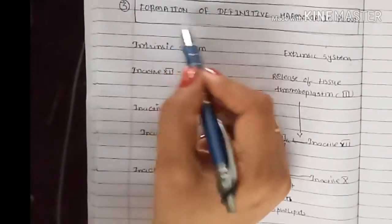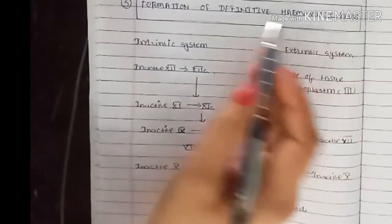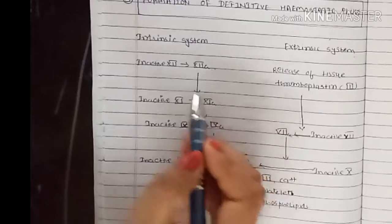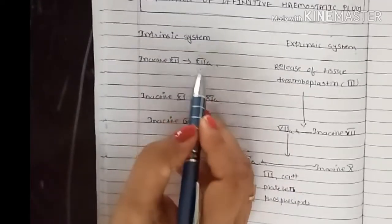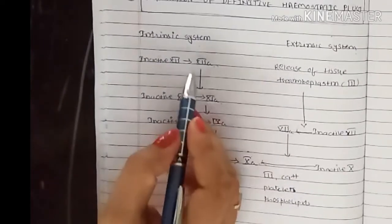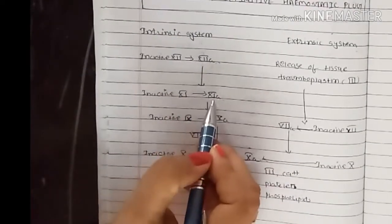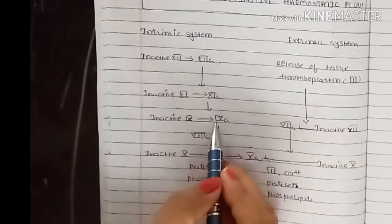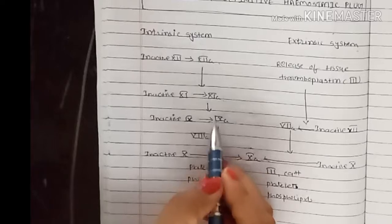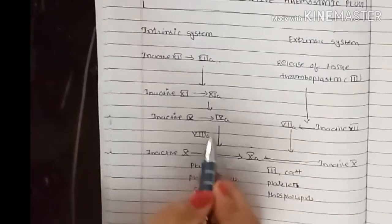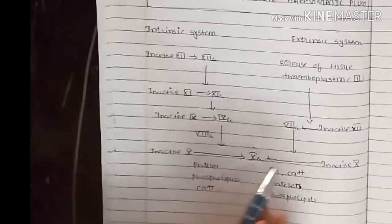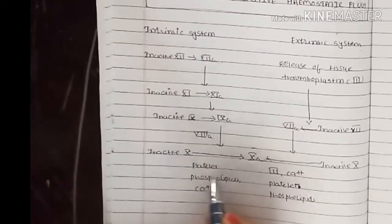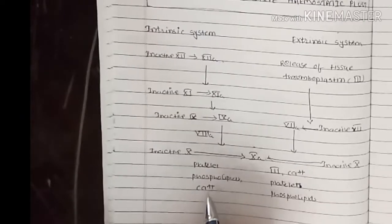Now, formation of the definitive hemostatic plug. When the intrinsic system of hemostasis gets activated, it causes activation of factor 12. Activated factor 12 causes activation of factor 11. Activated factor 11 causes activation of factor 9. Activated factor 9 and activated factor 8 form a complex, which causes activation of factor 10 in the presence of platelet phospholipids and calcium.